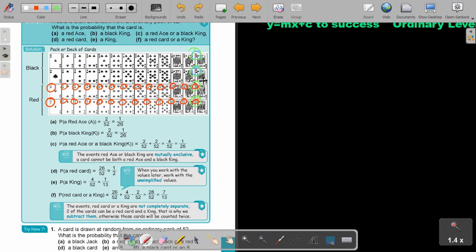You can even go and count it now. So it's one, two, and then you can count it only one time. So it's the 26 plus the two, which will give you 28 over 52, which you can simplify to 7 over 13. Remember, always the part that's overflowing, that's in both sets, you have to go and subtract. So the events, red card or king, are not completely separated. Two of the cards can be a red card or a king. That is why we subtract them. Otherwise, those cards will be counted twice.